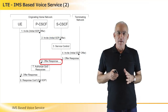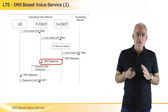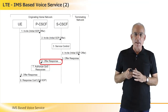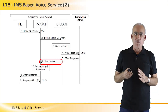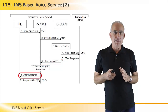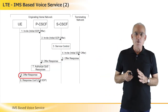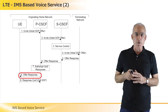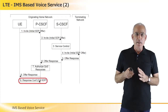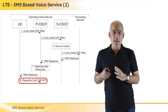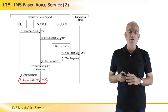At step six, the serving CSCF forwards the offer response message received from the terminating network to the proxy CSCF, authorizing the resources necessary for this session. At step eight, the proxy CSCF forwards the offer response message to the originating endpoint. At step nine, the UE confirms the receipt of the offer response message and the resource reservation is initiated.